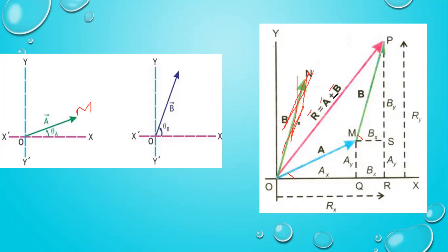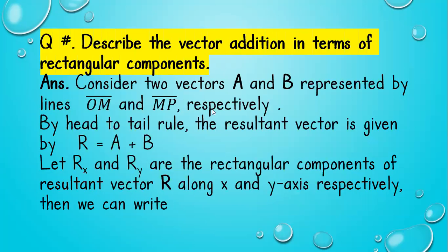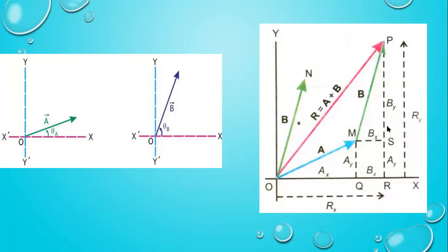First, add the vectors by the head-to-tail rule to get the resultant vector. Then drop perpendiculars from M and from P. All components on the X-side sum to Rx, and all components on the Y-side sum to Ry. So Rx = Ax + Bx, and Ry = Ay + By.